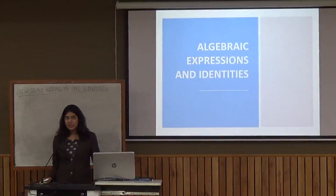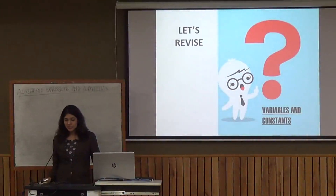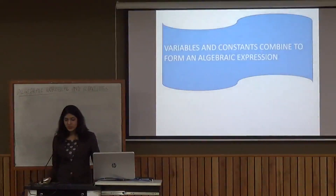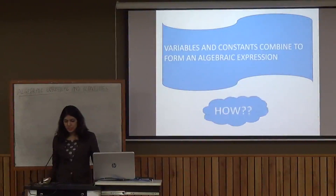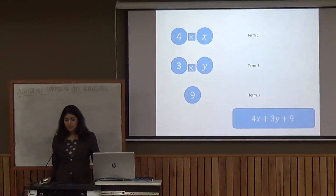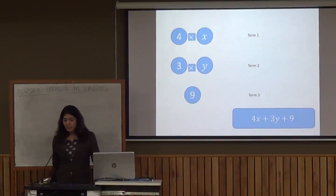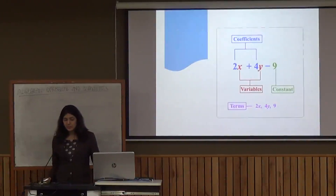We will discuss this chapter: algebraic expressions and identities. Let's revise variables and constants. Variables and constants combine to form an algebraic expression. For example, 4 times x is term 1, 3 times y is term 2, and 9 is term 3. Adding them, 4x plus 3y plus 9, we get an algebraic expression.